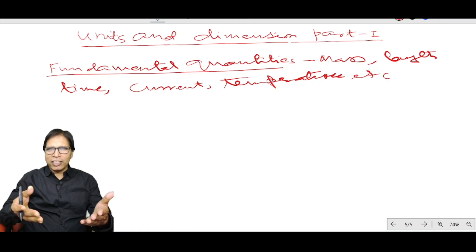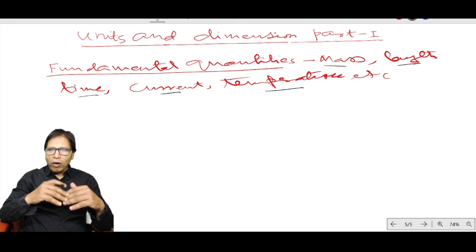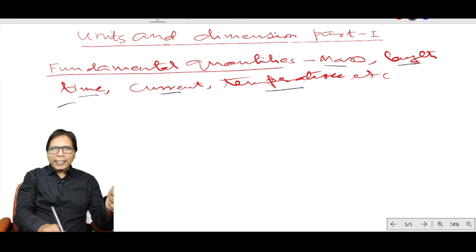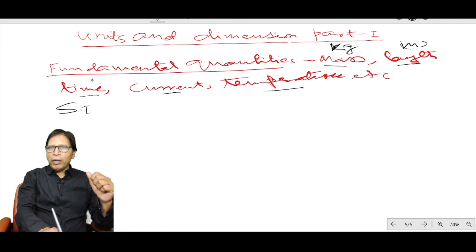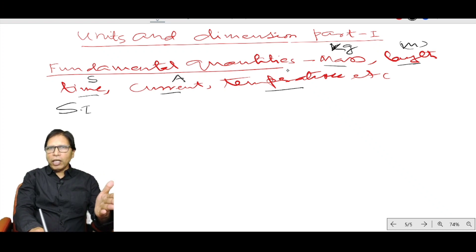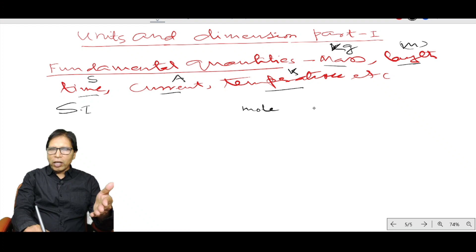Fundamental units are the units of fundamental quantities like mass, length, time, current, and temperature. In the SI system: the fundamental unit of mass is kg, length is meter, time is second, current is ampere, temperature is Kelvin, amount of substance is mole, and luminous intensity is candela.